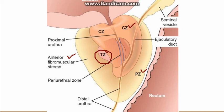The transitional zone is the site where BPH is seen. However, carcinomas originate in the peripheral zone.